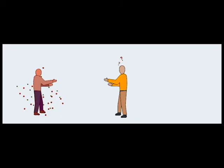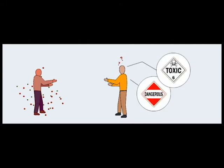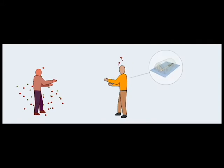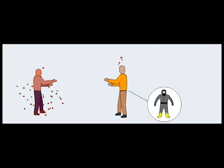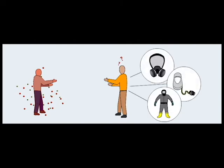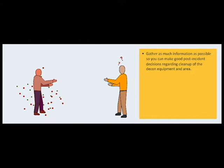In every emergency decontamination operation, a number of key decisions need to be made. First, you need to decide how hazardous the contaminant is. Second, determine the level and method of decontamination required. If other responders will be involved, the required level of personal protective equipment must be established. Finally, gather as much information as possible for post-incident decisions regarding cleanup of the decon equipment and area.